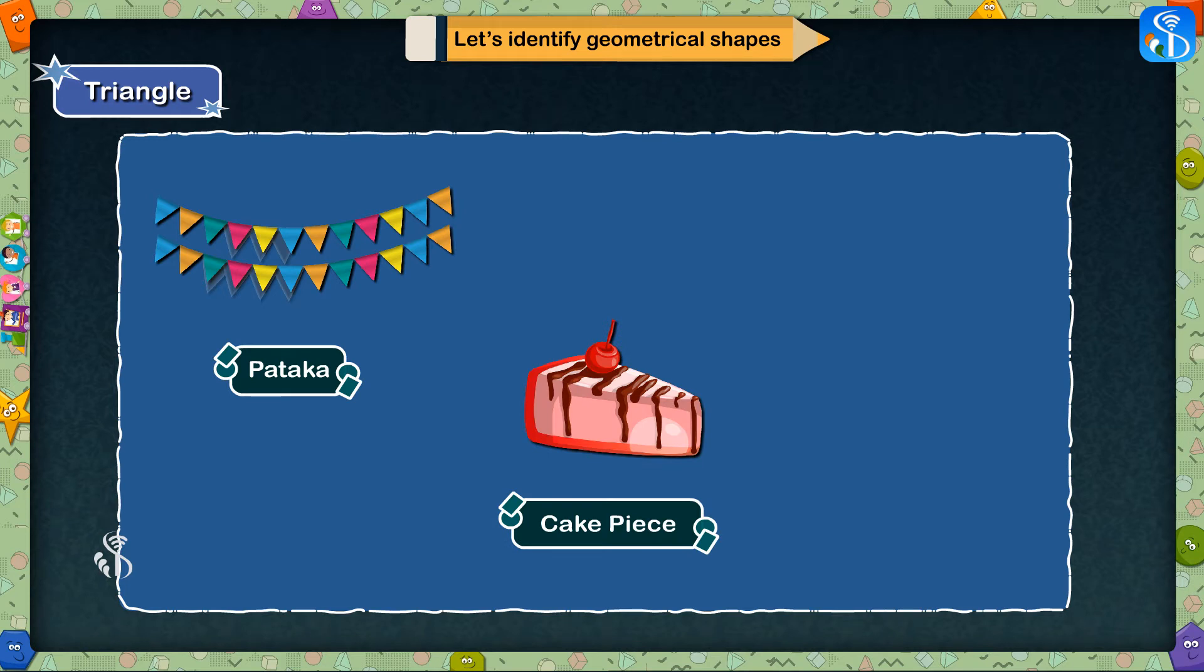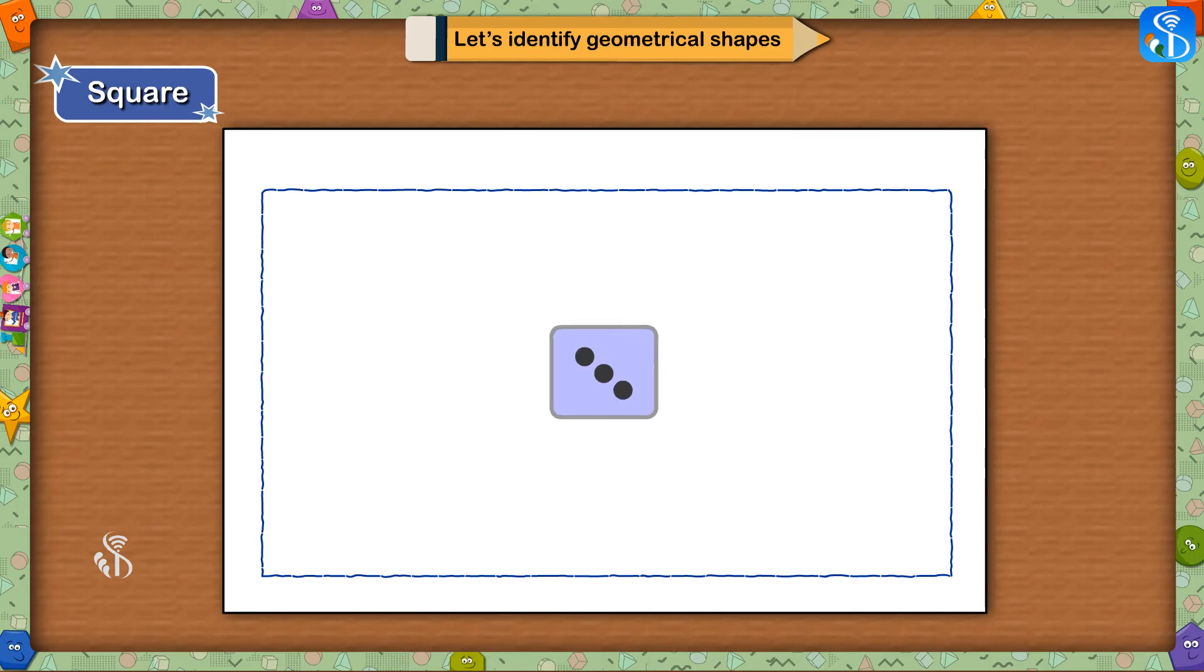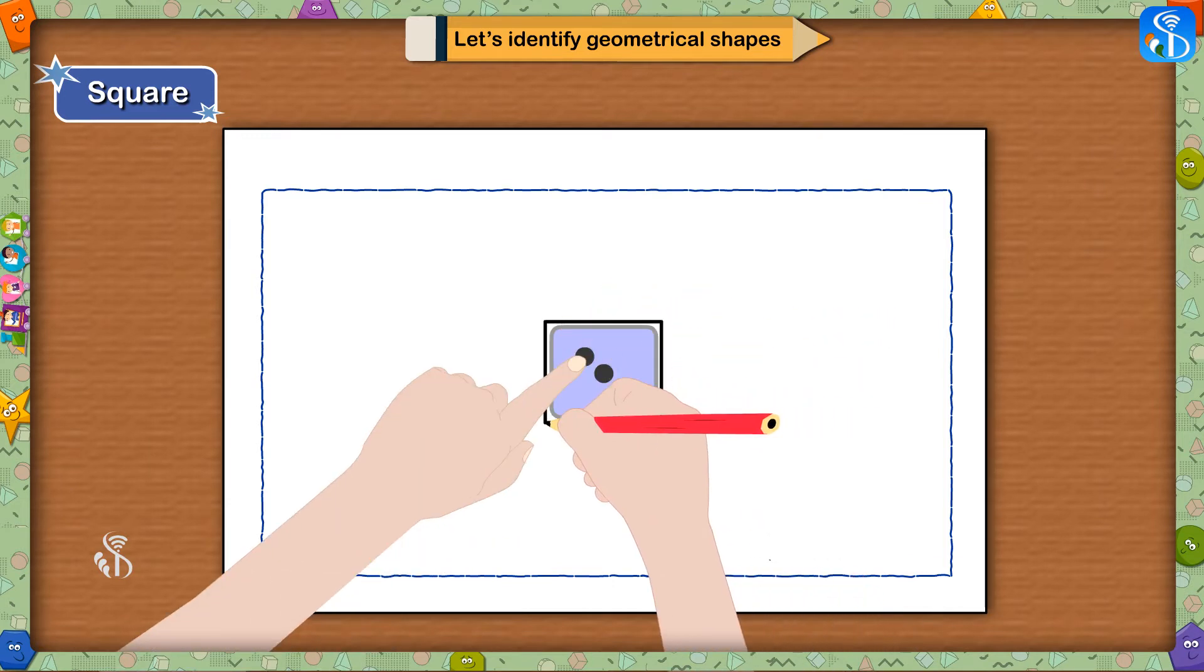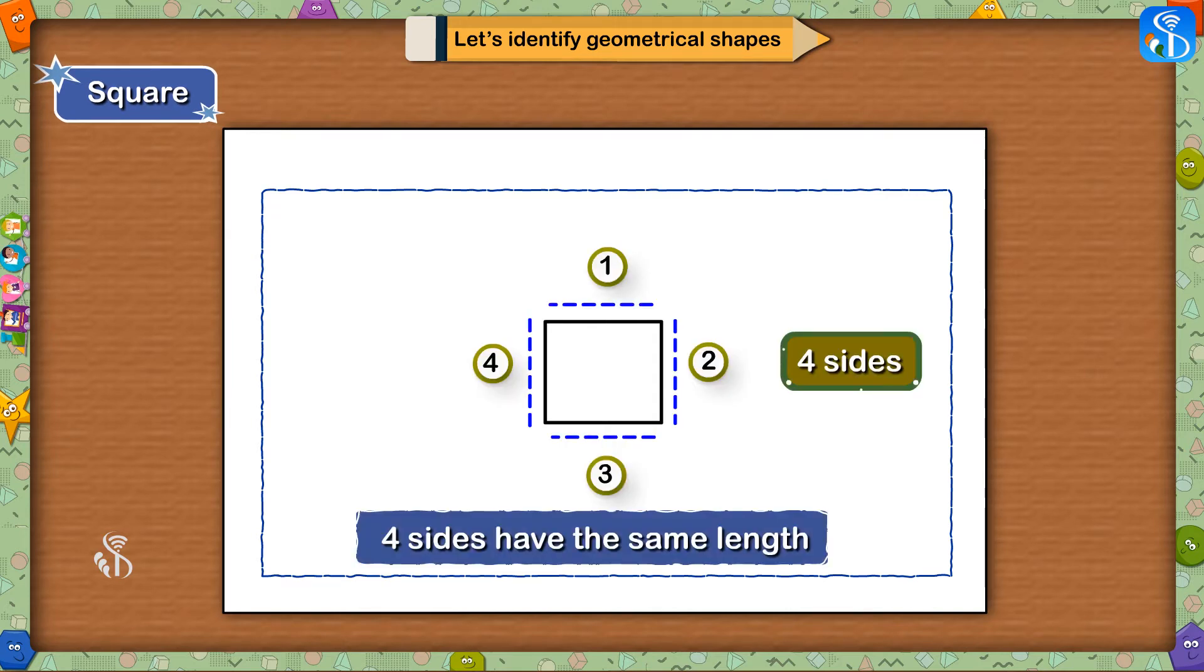A square has four sides and all the four sides have the same length.